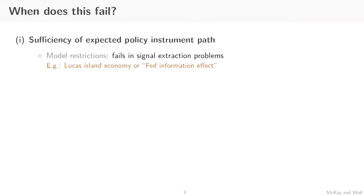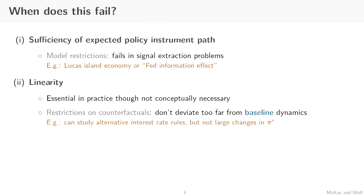When would this method not work? The best case we can come up with is models with a signal extraction problem — the Lucas Island economy or models trying to model a Fed information effect. There, when the policymaker sets policy, it's not just announcing the nominal interest rate; it's also communicating something about its view of the world. What information is contained in the policy choice depends on the policy rule, so that would not fit our framework. Also, linearity: if you're thinking about large changes in policy or large changes in pi-star, that probably would not be well suited to a linear model.